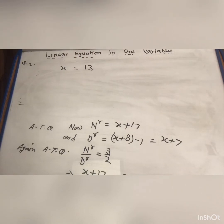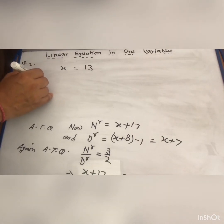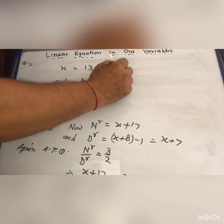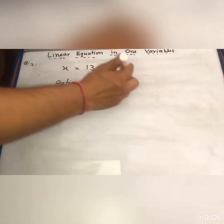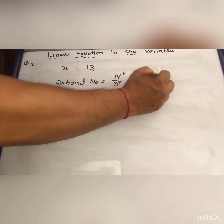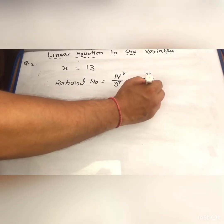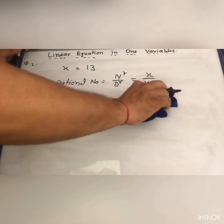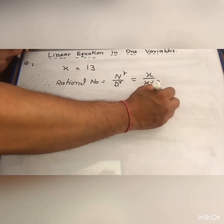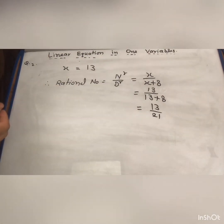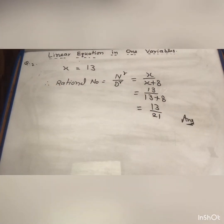The question asks for the rational number. Therefore, the rational number is numerator by denominator. The numerator is x equals 13, and the denominator is x plus 8 equals 13 plus 8 equals 21. So the rational number is 13 by 21. This is your final answer. Thank you.